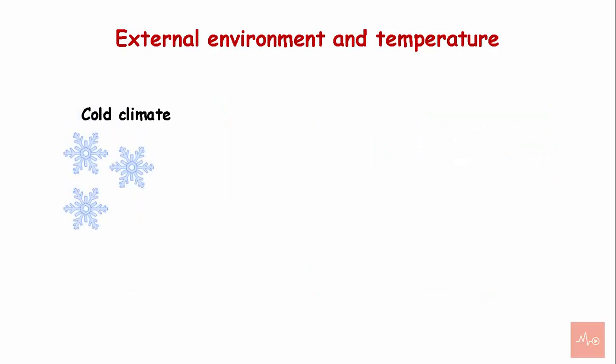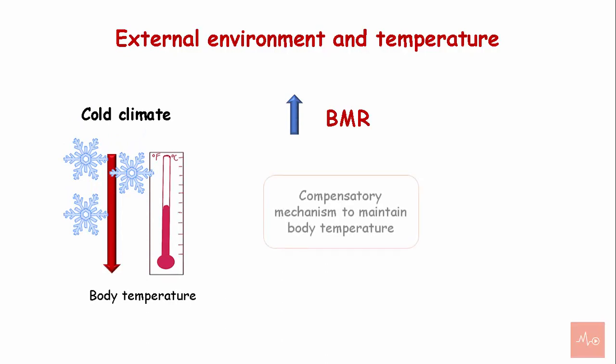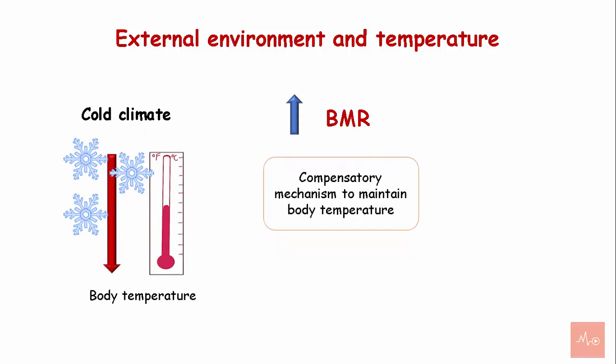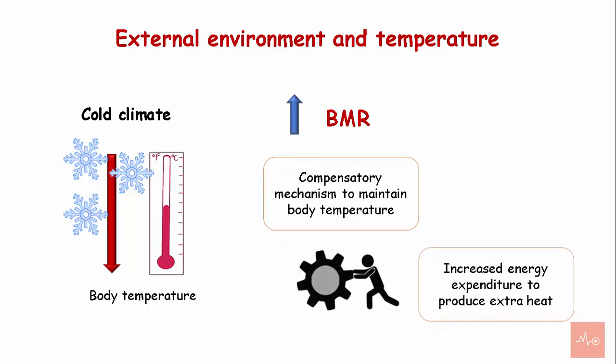External environment and temperature. Cold climate reduces the body temperature and increases the BMR. Increased BMR is a compensatory mechanism to maintain body temperature, and there is increased energy expenditure to produce the extra heat.